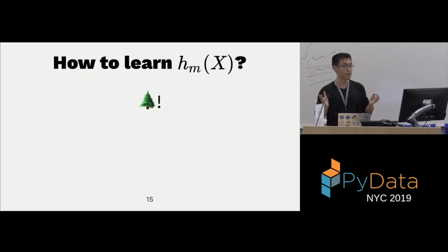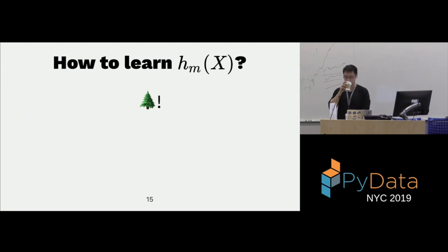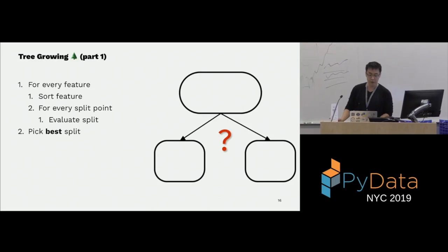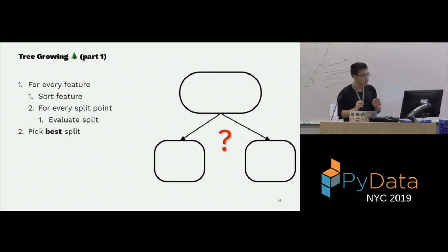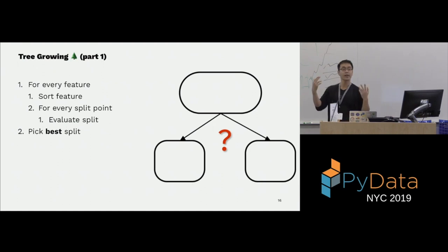How do we learn these H's? We use trees. H(m) predictions are trees — not necessarily Christmas trees, but decision trees. To grow these trees, for every node we want to split, we look at each feature, sort the feature, find the best split point, do this for every leaf node, and then split on the best node.